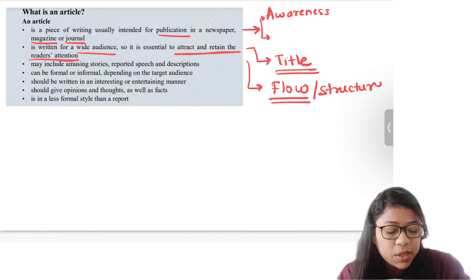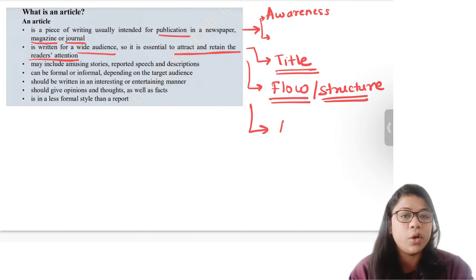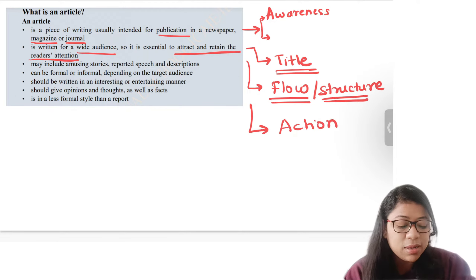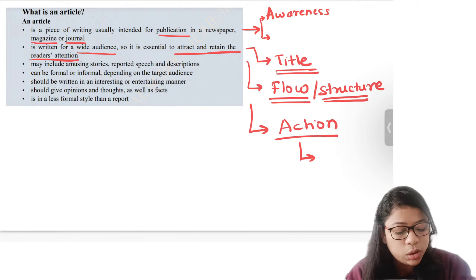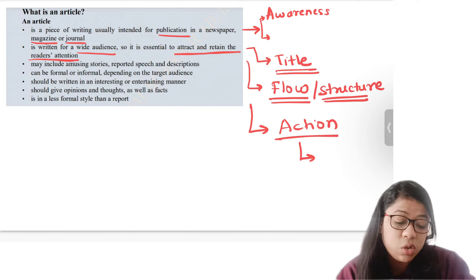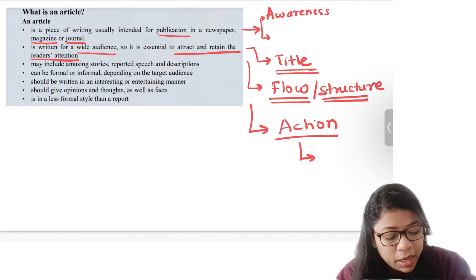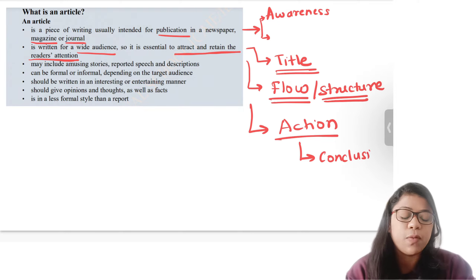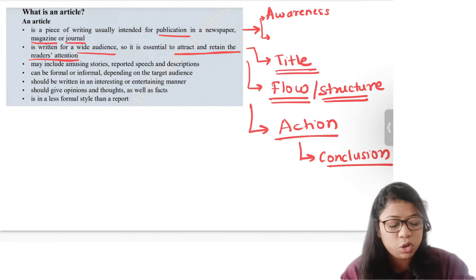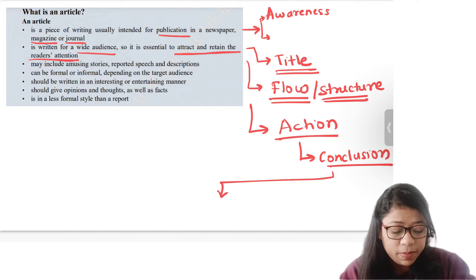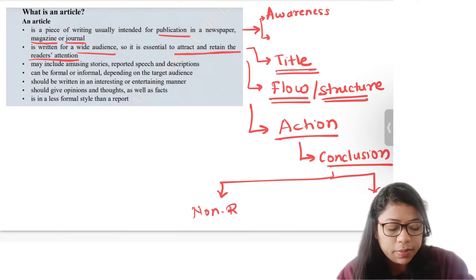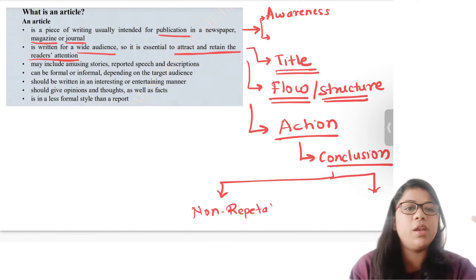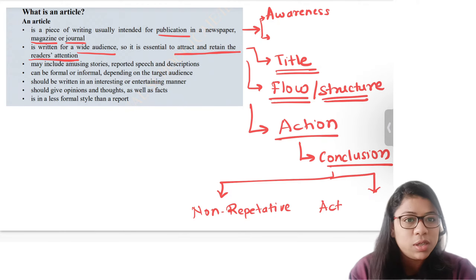At the end, consider what action you want your reader to take — especially if you're writing a persuasive article. That action is also called the conclusion. I always tell my students there are two important strategies for writing a conclusion: it should not be repetitive, and it should be an action sentence or paragraph where you tell your audience to take a specific action.